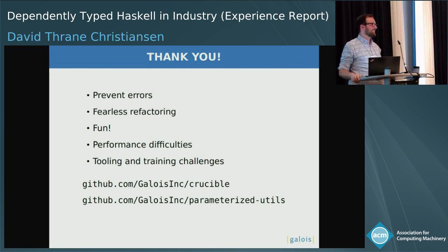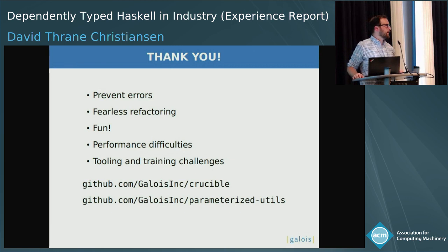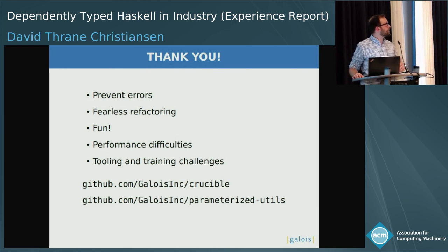Q: How do you handle well-scoping in the App type family? The well-scopedness property, how do you express that? A: We get that by parameterizing — I didn't show you the entire expression type, but we also keep track of the variable context, which is going to be one of those assignments, and then we have the index shown earlier on top of the variable constructor. So it looks a lot like the way you do it in something like Agda.